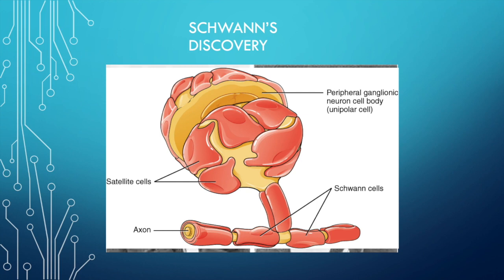This would be unanswered until the creation of the electron microscope. But today, we know this type of cell helps with the protection and myelination of the neuron in the peripheral nervous system.